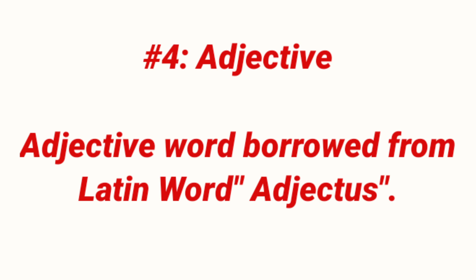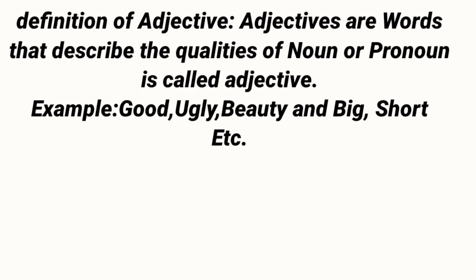Number four: Adjective. Adjective word is derived from the Latin word 'adjectivus'. Definition of adjective: Adjectives are words that describe the qualities of a noun or pronoun. Adjective, noun ya pronoun ki qualities ya achi ya buri khaasiyat ko bayaan karti hai. As examples: good, ugly, beauty, big, short, etc.